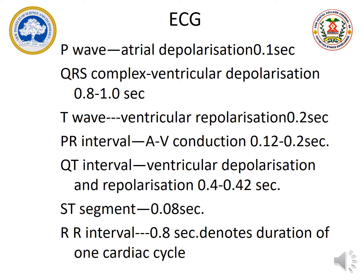ECG is an electrocardiogram. It is an instrument which is used to record the muscle activity. ECG is a graph which is going to be created with the help of an electrocardiogram instrument. It has two kinds of leads: unipolar leads and bipolar leads. With the help of these leads, the muscle activity is going to be picked up and recorded on a graph sheet. This we call it as ECG.